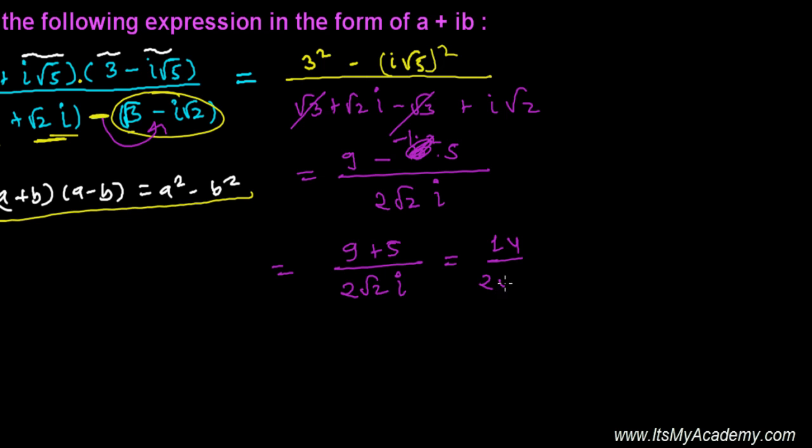You can cancel this 14 by 7, so it's 7 over √2i. If you want, you can do rationalization here. Actually, you must do it because you cannot leave i in the denominator.